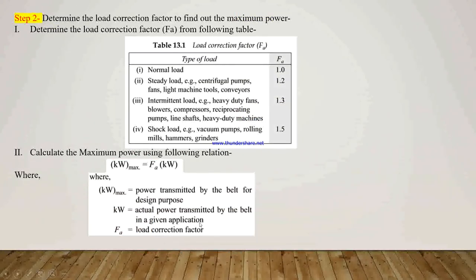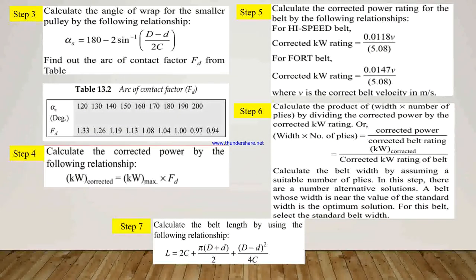In step number 3, we have to calculate the angle of wrap for the smaller pulley using the relationship: alpha_s is equal to 180 minus 2 sin inverse of (capital D minus small d) divided by 2c. From this angle of wrap, we calculate the contact factor FD from the table. Table 13.2 is given to select the arc of contact factor FD, which depends upon alpha_s, the angle of wrap.